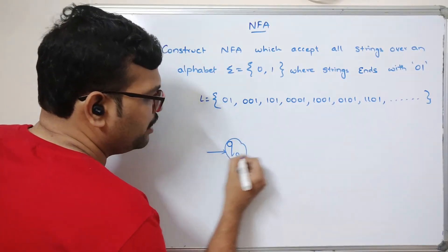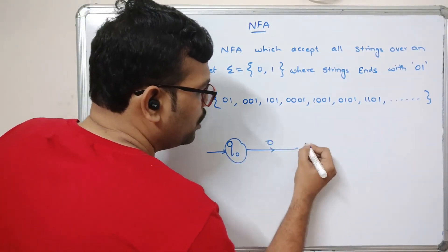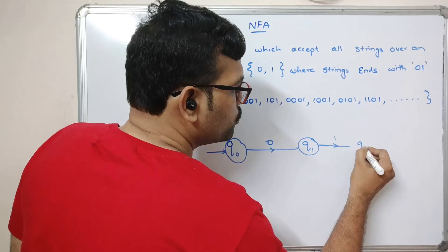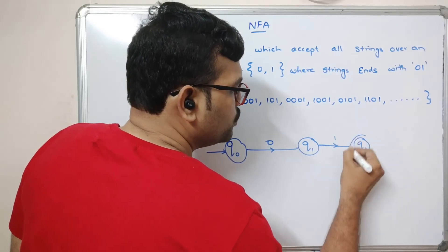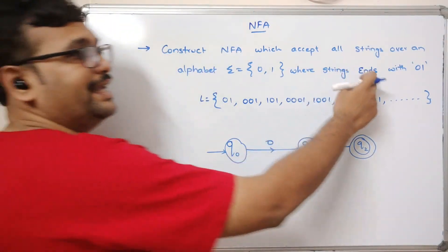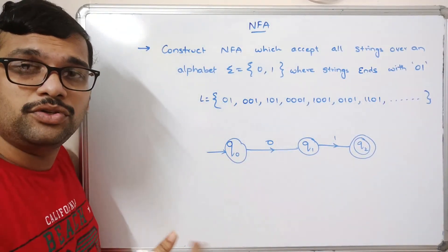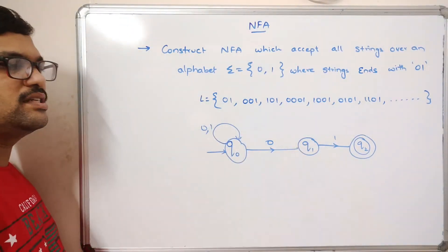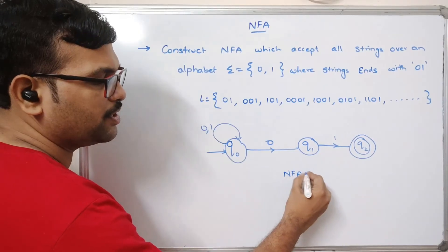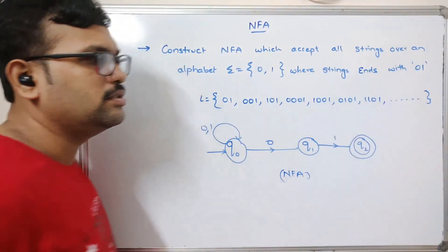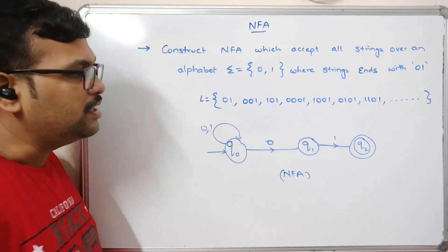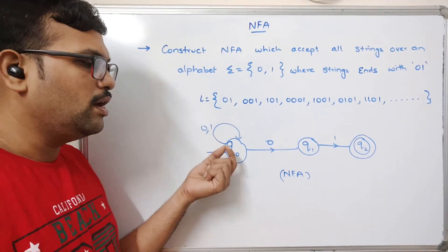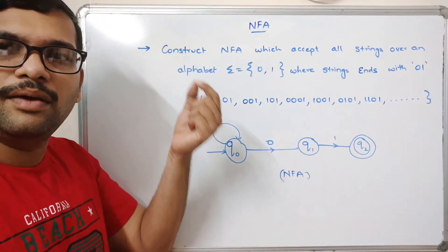For this NFA: Q-naught is the initial state. Q-naught on 0 moves to Q1, and Q1 on 1 moves to Q2, which is the final state. Since the string can start with any number of zeros or ones, we add a self-transition on both 0 and 1 at Q-naught. This NFA accepts all strings ending with '01'.